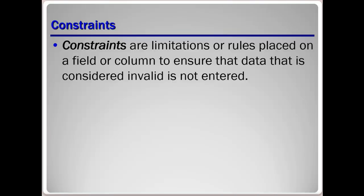The primary key constraint uniquely identifies each record in a database table, ensuring no duplicates. The primary key must contain unique values and cannot contain any null values. Every table should have a primary key, and each table can have only one. You also have a foreign key constraint, where one table points to a primary key in another table — that's how a foreign key is defined.